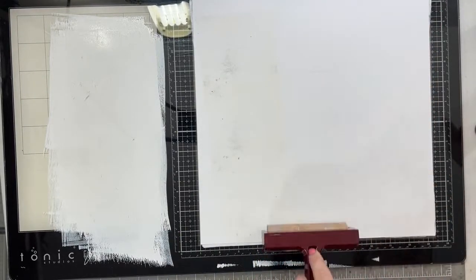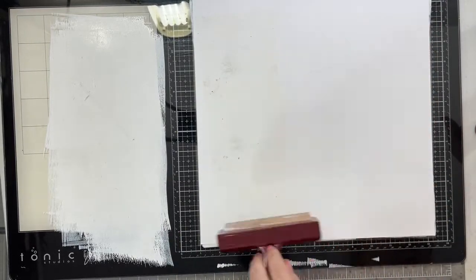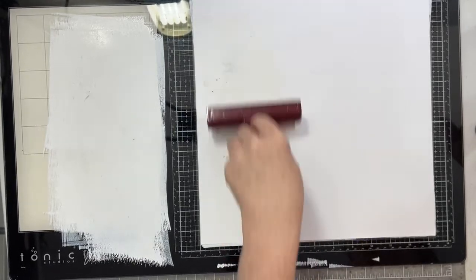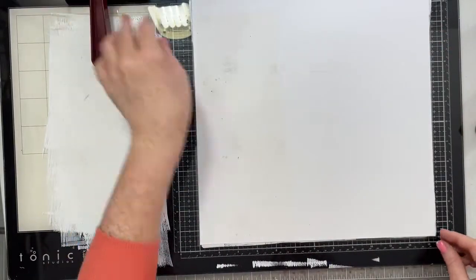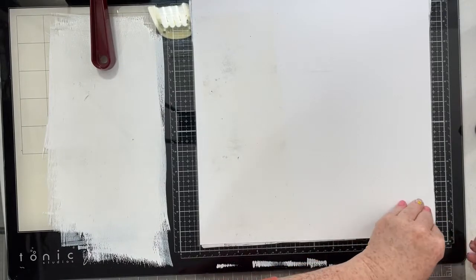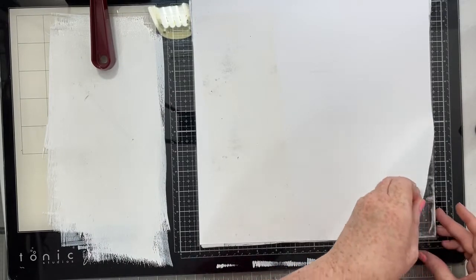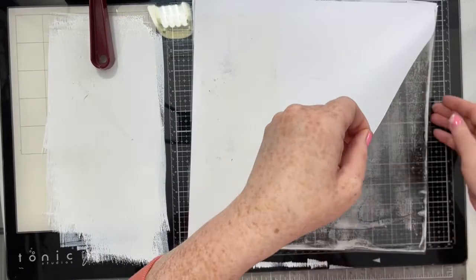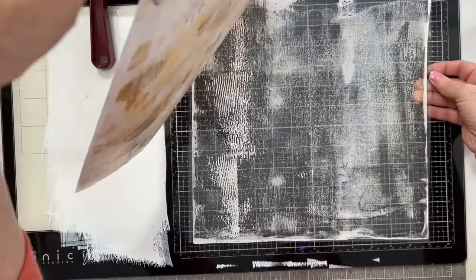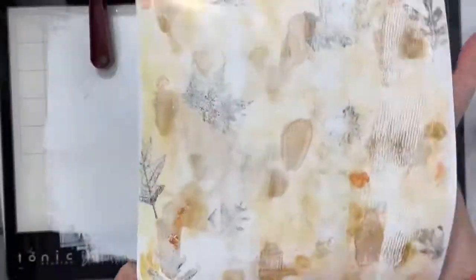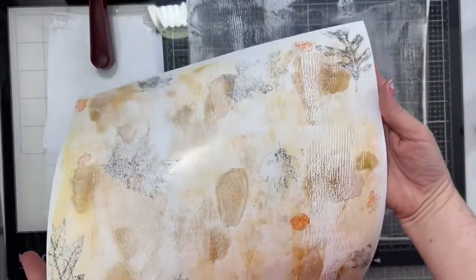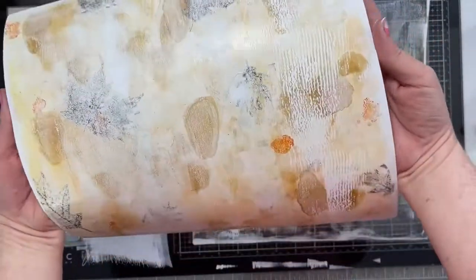I will say that if you are someone who doesn't like to make your tools messy, be forewarned that the alcohol ink, whenever you brayer onto the gel press, it will absolutely 100% stain your brayer. I'm going to pull and ta-da! Look how pretty that is. I love how this background turned out.